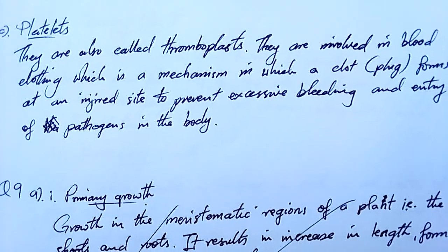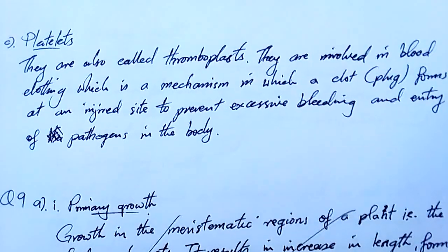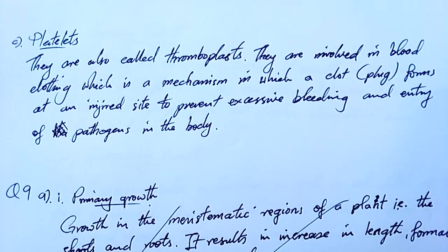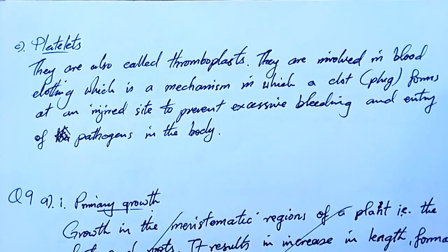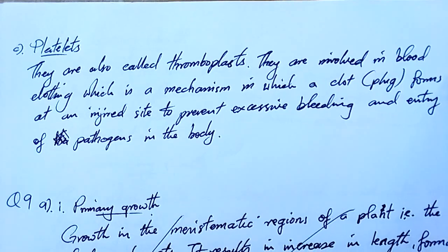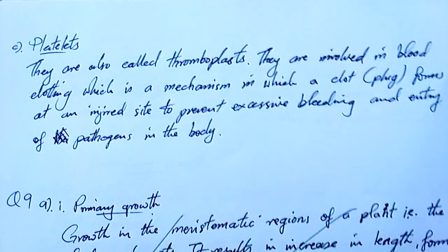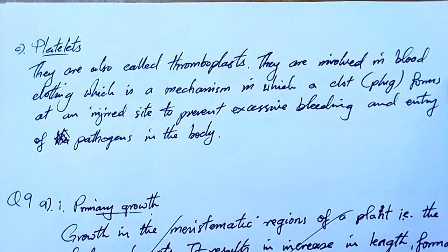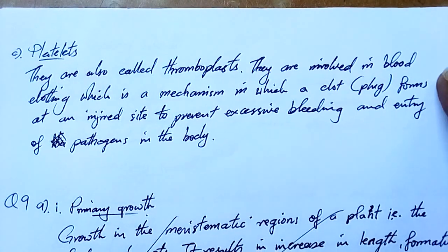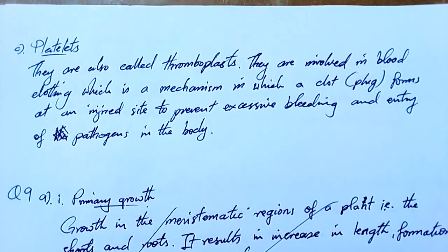Finally, the platelets — the third component of blood, also called thromboplasts. They are involved in blood clotting, which is a mechanism in which a clot or plug forms at an injured site to prevent excessive bleeding and entry of pathogens into the body.